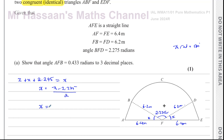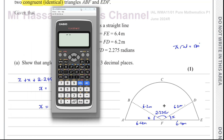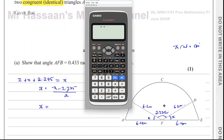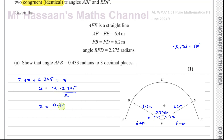Therefore x equals (π − 2.275) / 2. We don't need to worry about radian mode for this particular calculation since we're not using trig functions, but it's always best practice. Computing (π − 2.275) / 2 gives 0.433296..., which to three decimal places is 0.433 radians — confirming the required answer.